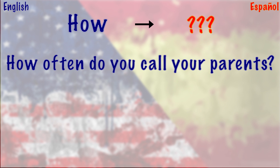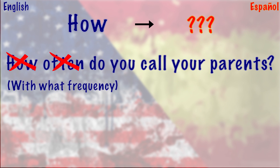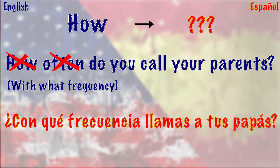For example, 'How often do you call your parents?' — what we can do is reword the phrase. Instead of 'how often,' say 'with what frequency': 'Con qué frecuencia llamas a tus papás?' This may sound a little unnatural in English, but rewording it first gives us a nice translation into Spanish without worrying about translating word for word.